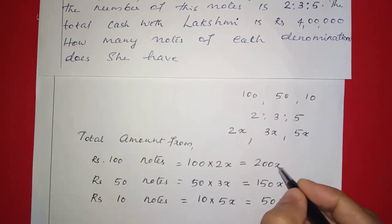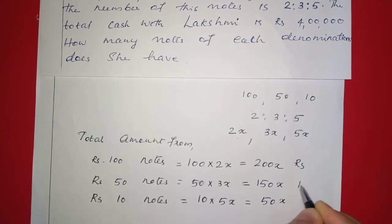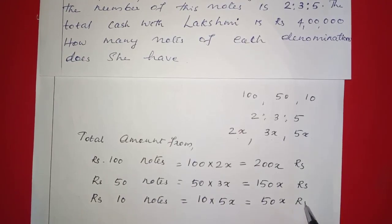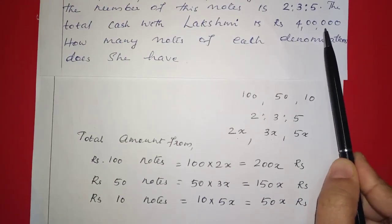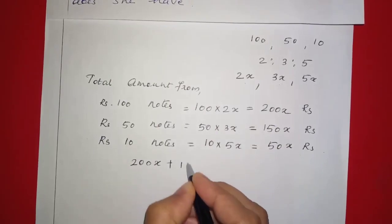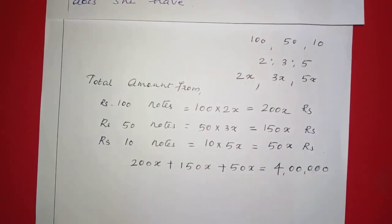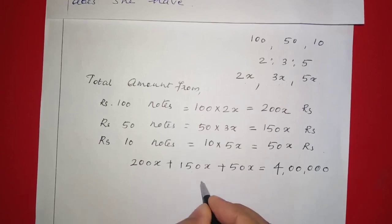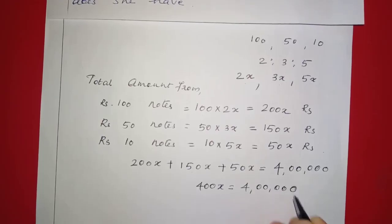So 100 rupee notes give 200x rupees, 50 rupee notes give 150x rupees, and 10 rupee notes give 50x rupees. Adding all amounts gives 4 lakh rupees total: 200x plus 150x plus 50x equals 4 lakhs. 200 plus 150 is 350, plus 50 is 400. So 400x equals 4 lakhs.